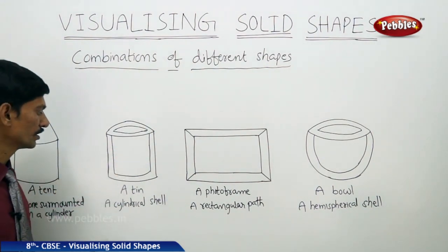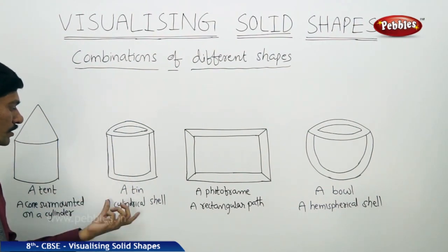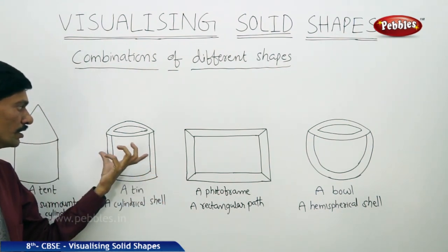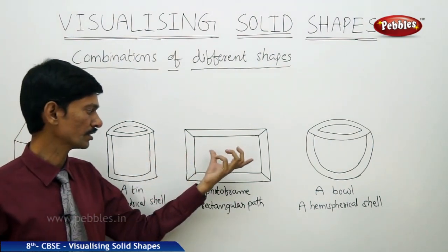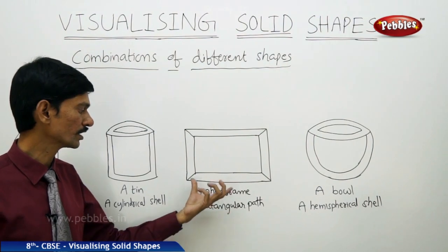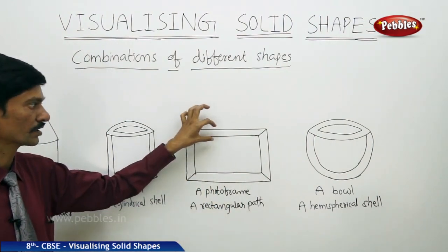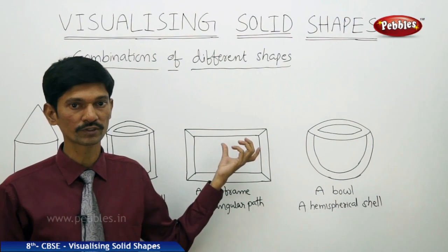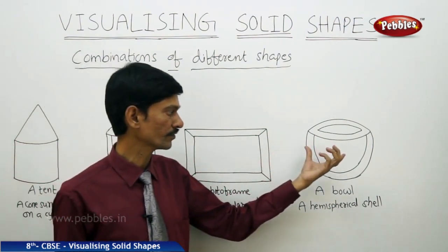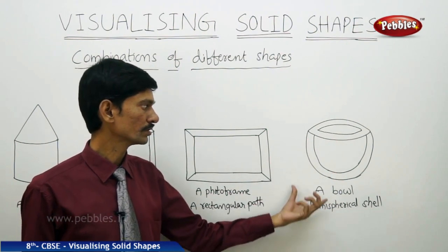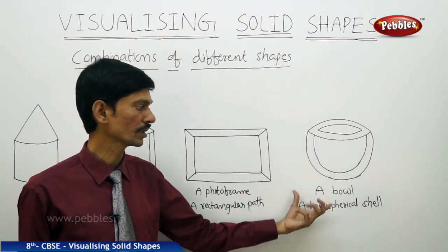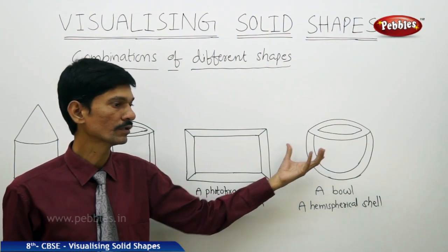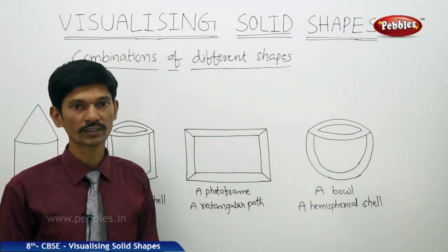In the second figure, a tin is a cylindrical shell — a combination of two different cylinders: an inner cylinder and an outer cylinder. The third figure is a photo frame, which is a rectangular path with an outer rectangle and an inner rectangle. The fourth figure is a ball — a hemispherical shell with an inner hemisphere and an outer hemisphere. These are examples of combinations of different shapes.